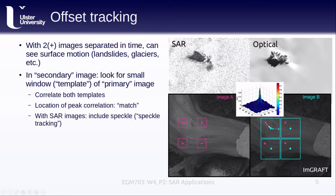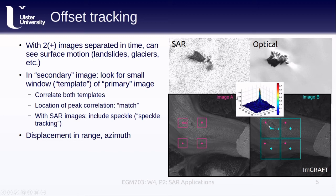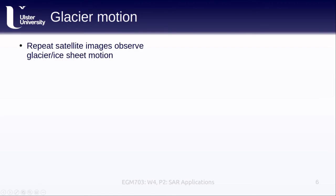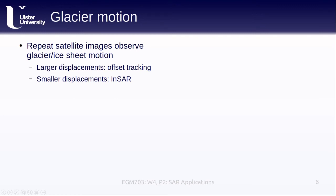With SAR images, we usually correlate using both components of the complex image — that is, we include the speckle — which is why you'll sometimes see this technique referred to as speckle tracking, at least in the SAR context. We normally use non-terrain corrected images for this, so this technique gives us the displacement in both the range and azimuth directions. In order to transform this to ground coordinates, we have to geocode the offsets using a DEM. Repeat satellite images let us observe the motion of glaciers. For larger displacements, typically on the order of meters per day, we can use techniques like offset or speckle tracking. For smaller displacements, on the order of centimeters per day or potentially even smaller, we can use InSAR.